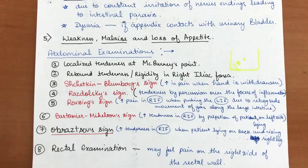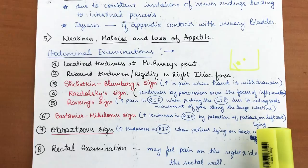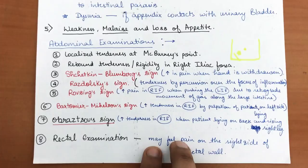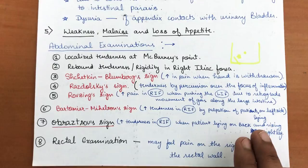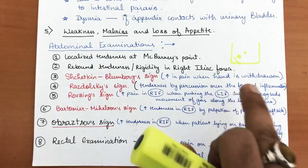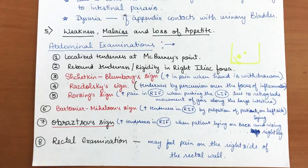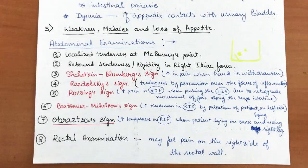The Bartomier-Michelson sign is increased tenderness in the right iliac fossa on palpation with the patient lying on the left side. The Obraztsov sign is an increase in tenderness in the right iliac fossa when the patient, lying on their back, raises their right leg — this irritates the nerve endings of the vermiform appendix. Finally, rectal examination should also be performed, especially if the appendix is in a retrocecal or pelvic position, where some of these surface signs may not be present, to confirm the diagnosis of acute appendicitis.